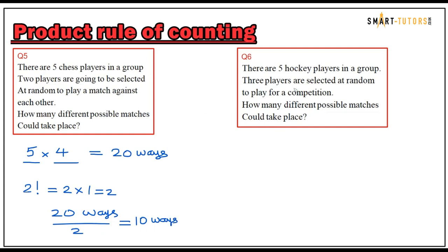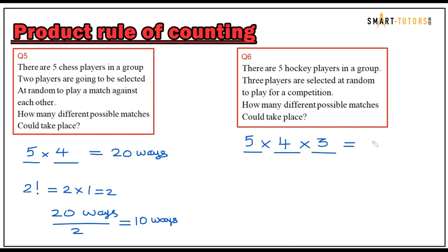Question number six: There are five hockey players in a group; three players are selected at random to play in a competition. Put three slots and multiply by the product rule. The first player is selected from five, the second from four, and the third from three. Five times four is twenty, times three is 60 ways.